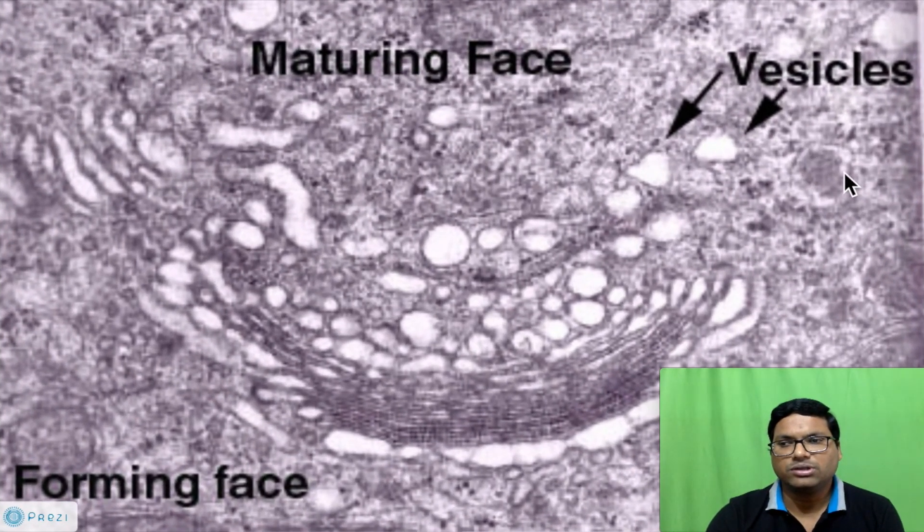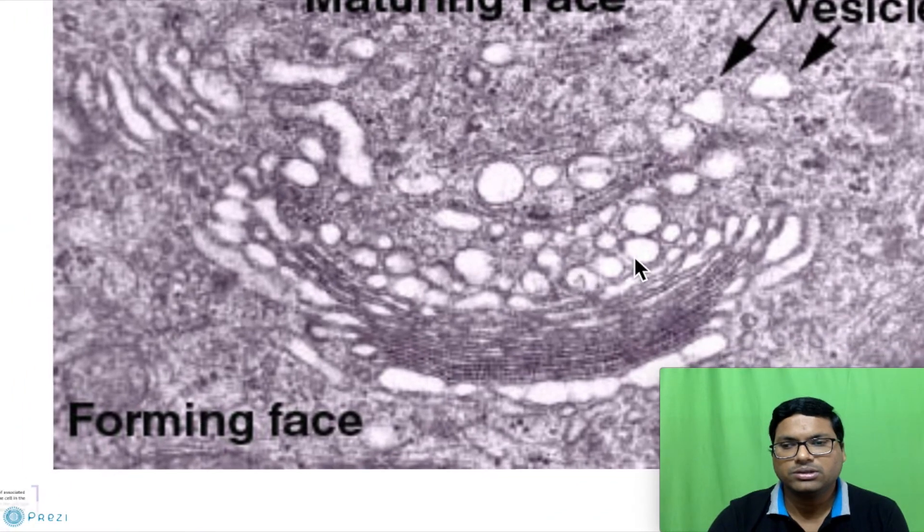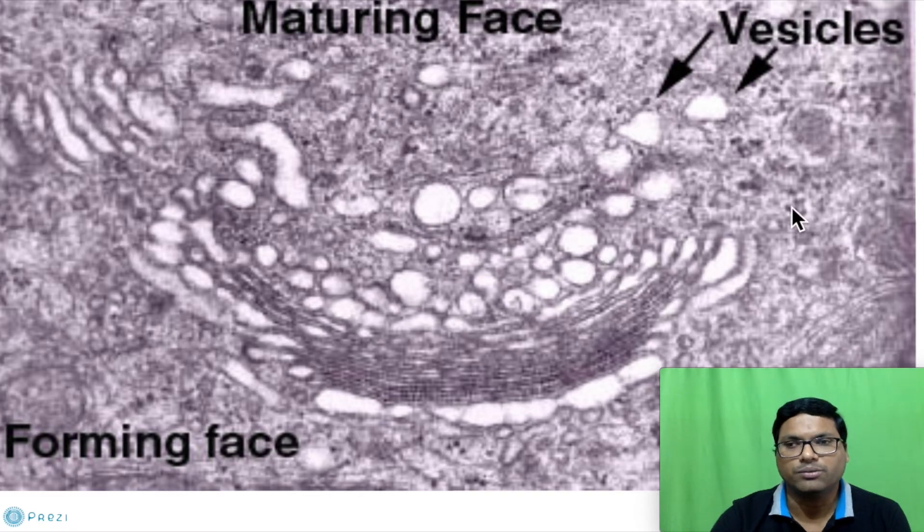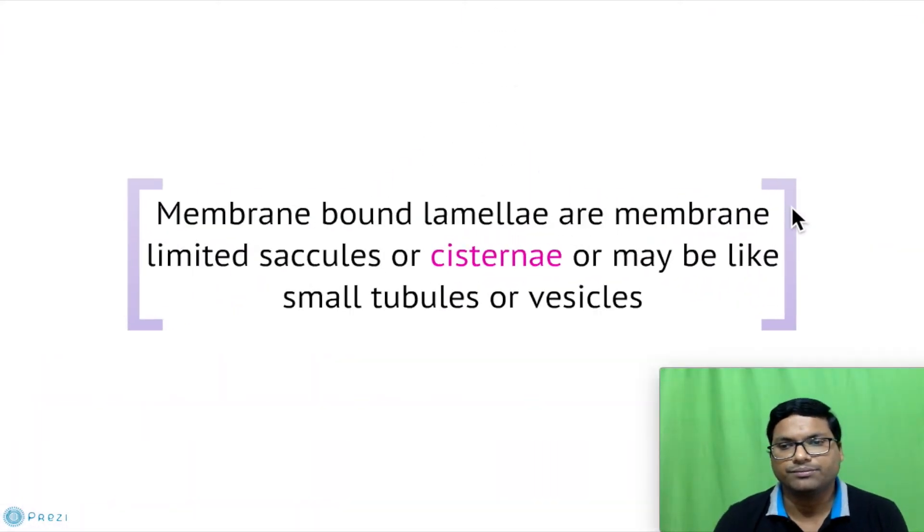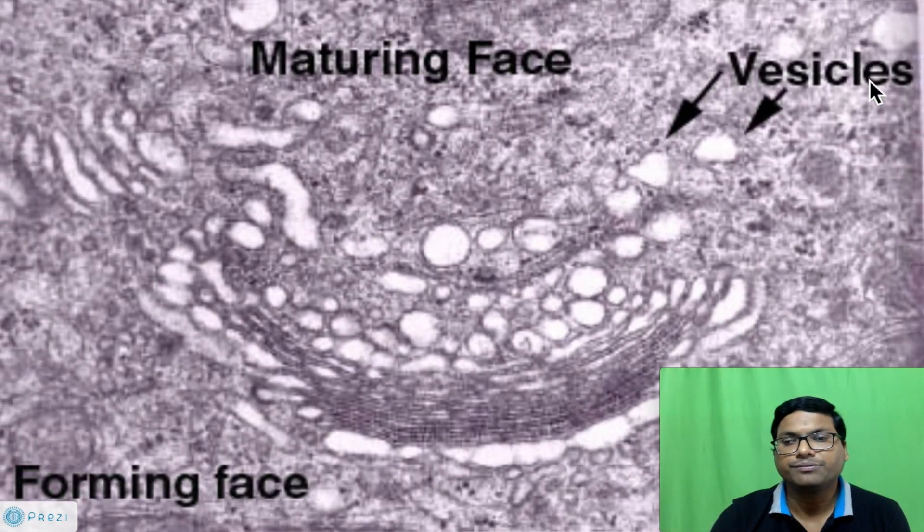This is the actual microscopic view of Golgi. This is the forming phase and see how the cisternae are arranged as flattened sacs, and these are vesicles getting out of the Golgi. Membrane-bound lamellae are the membrane-limited saccules or cisternae, or like small tubules or vesicles, as you can see in the diagram.